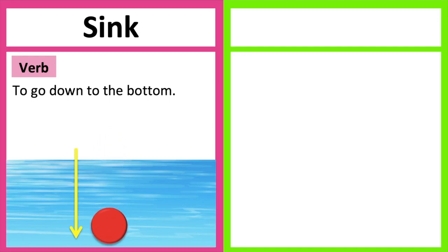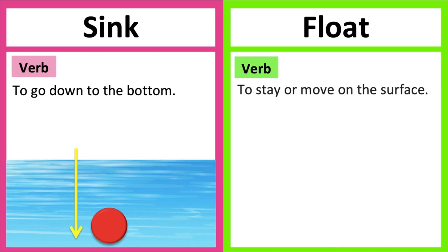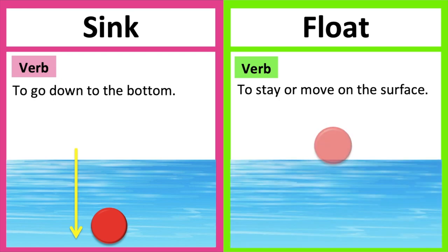of something like water. Float is a verb and it means to stay or move on the surface, so an object that floats usually stays and moves on the top of a surface like water. It doesn't sink.